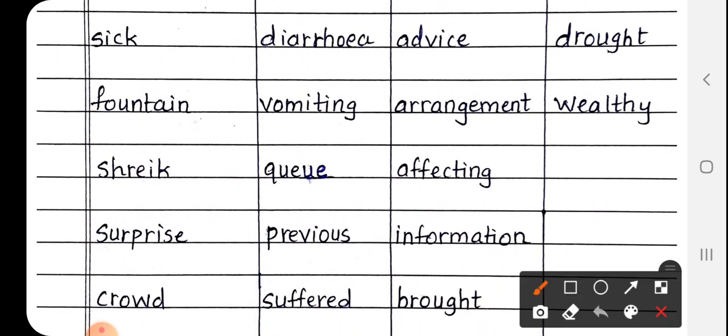Next is diarrhea. Diarrhea. D-I-A-R-R-H-O-E-A. Diarrhea matlab dast. Next is vomiting, V-O-M-I-T-I-N-G. Vomiting means ulti. Next is queue, Q-U-E-U-E. Queue matlab qatar. Jo line hoti hai, usse kehte hai queue. Next is previous, P-R-E-V-I-O-U-S. Previous matlab pehle ka. Next is suffered, S-U-F-F-E-R-E-D. Suffered matlab bhugatna.